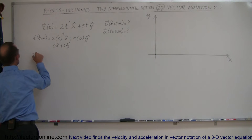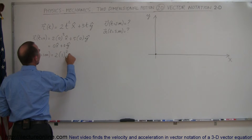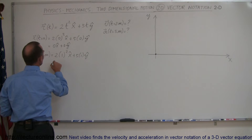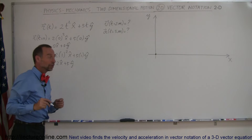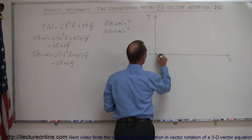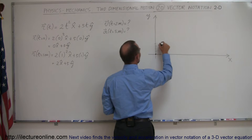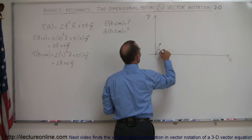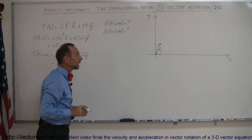Now let's find where the object is at t equals 1 second. That means it's 2 times 1 squared in the x direction plus 5 times 1 in the y direction, which equals 2 in the x direction plus 5 in the y direction. We can plot that: 2 in the x direction and 5 in the y direction. This gives us the position vector r₁, which means after 1 second, the object is located at that point.